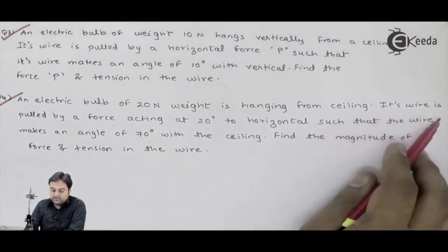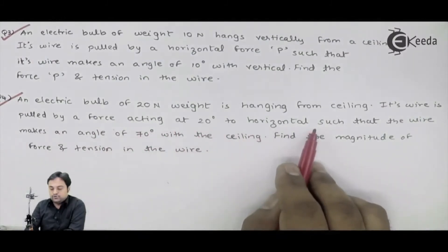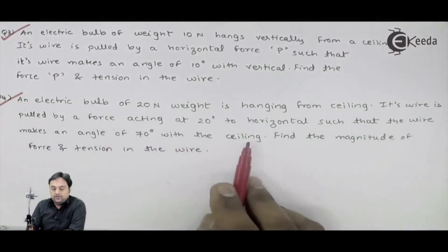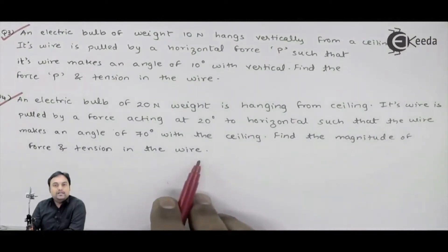Its wire is pulled by a force acting at 20 degrees to horizontal such that the wire makes an angle of 70 degrees with the ceiling. Find the magnitude of force and tension in the wire.